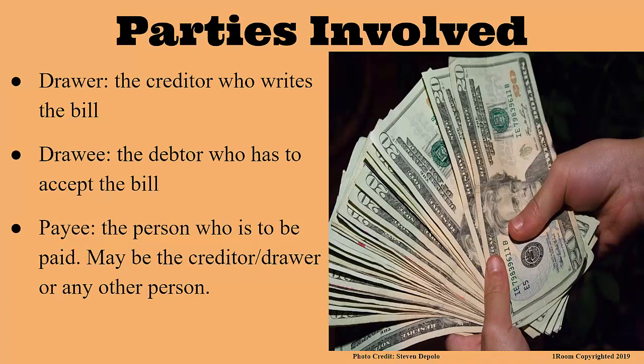So it only involves the creditor and the debtor? Well, let's use the correct terms. The creditor, who is also the one who writes the bill, is called the drawer — just like in check payment. The debtor is called the drawee, and he has to accept the bill. The person who receives the payment from the debtor is called the payee. The payee may be the drawer or any other person as directed by the drawer.